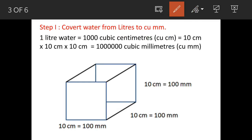Working out the volume of 1 liter of water in cubic millimeters gives us 10 to the power of 6 — that is 1 followed by 6 zeros. So this is the volume of 1 liter of water expressed in cubic millimeters.